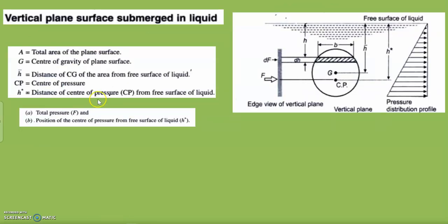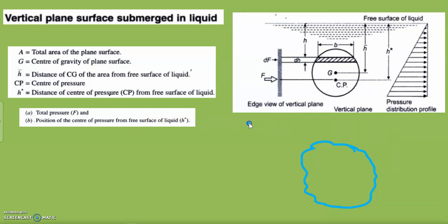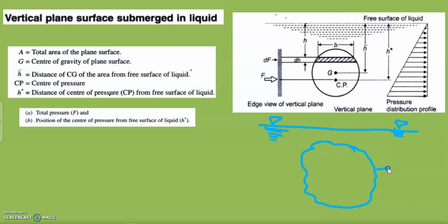Consider a vertical plane surface — it could be circular or any shape — that is vertical in water. The topmost line is the free surface of the liquid, and we also mark the bottommost waterline. We are looking for the center of gravity of this surface.